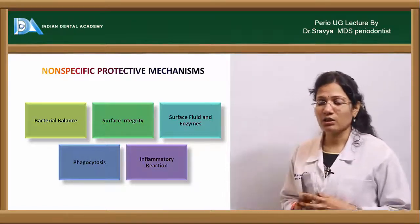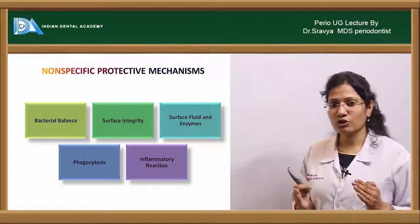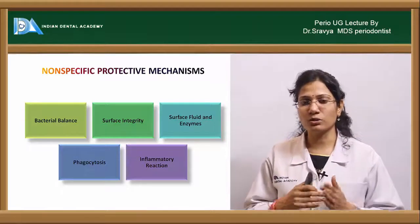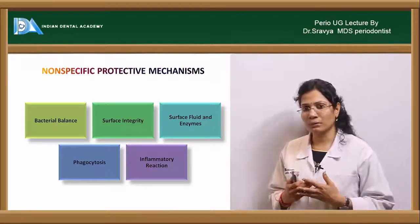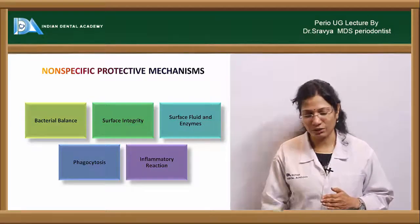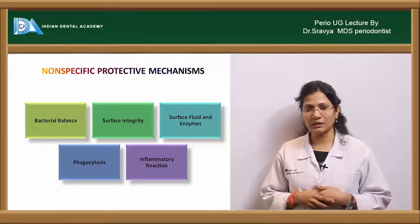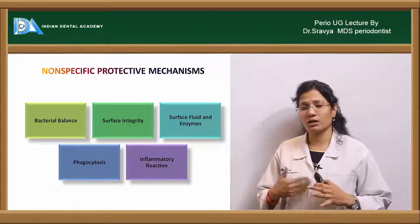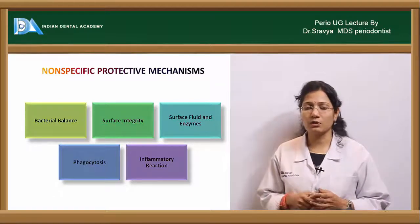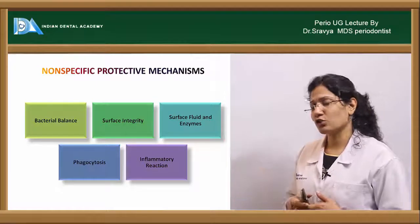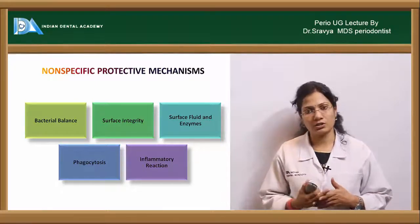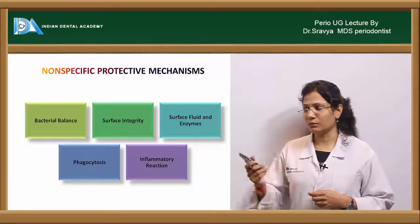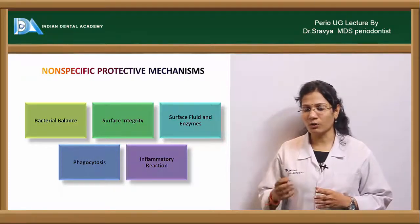Surface integrity refers to the structure of your epithelium and tooth surface. If your epithelium is properly arranged without any break, it maintains proper integrity. The oral epithelium takes about 10 to 12 days for its renewal process, whereas the junctional epithelium renews itself within just 5 days. There is constant renewal of old epithelium to new epithelium, which maintains the surface integrity of the tissues.